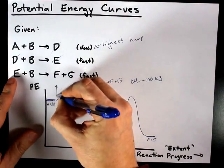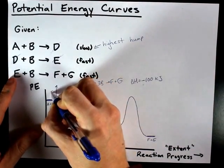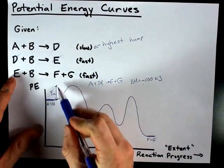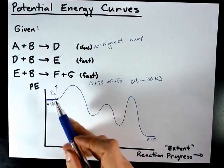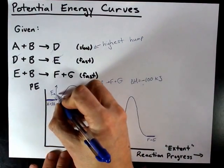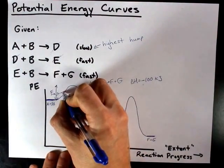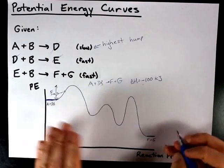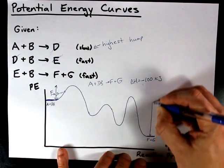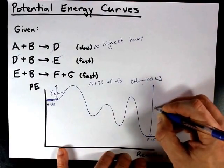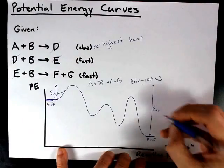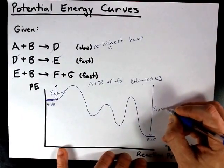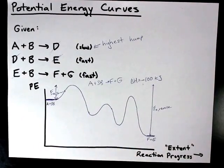The activation energy is defined as the amount of energy it takes to get from reactants to the top of the highest hump. I've labeled that here. Now, that's actually Ea of the forward reaction. If this was a reversible reaction, I would have a second activation energy. Over here from products to the highest hump, that would be the activation energy of the reverse reaction.